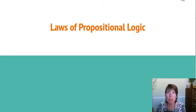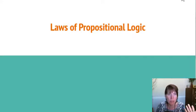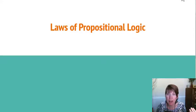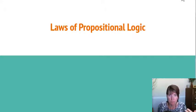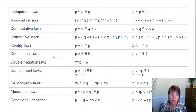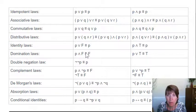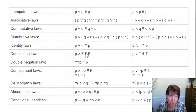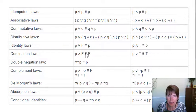Now that we have propositions and the concept of logical equivalency — where one compound proposition can be equivalent to another — we can do manipulation. We can move things around, swap how things are, and manipulate these expressions. This is very similar to manipulating formulas in algebra. When we do that, there are certain laws about what we can and cannot do. So here's a bunch of those laws. Some of them are the same as what we use in algebra, and some of them are kind of new.